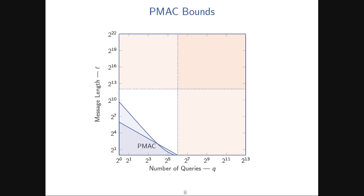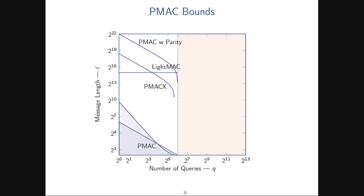What do PMAC's bounds look like? You can see it's still in the first quadrant, just like EMAC — you still have the birthday bound and the Preneel-Van-Oorschot attack. But up until now, the message-length attack was non-existent for PMAC; nobody knew. So we have constructions alleviating message-length dependence based on PMAC, but we don't even know if PMAC itself provides bounds up there. The question is: are PMAC's bounds up there, or is there an attack? Can PMAC be moved up there?